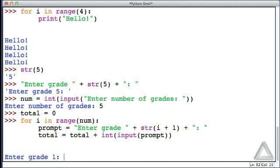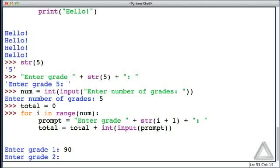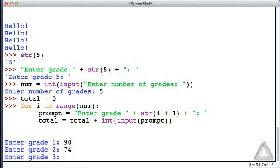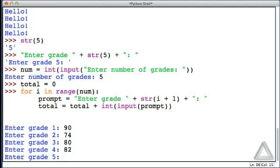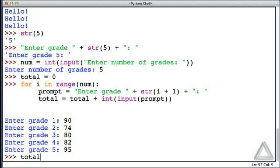Let's hit return twice. We have the prompt of enter grade one. Let's go with 90, grade two 74, grade three 80, grade four 82, and grade five is 95. Now what is total? It's the sum of all those grades.